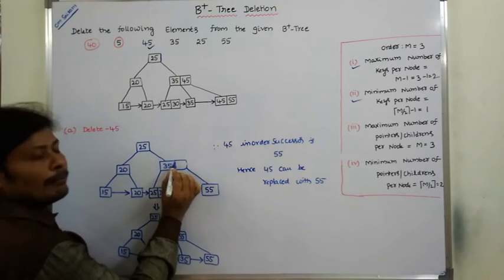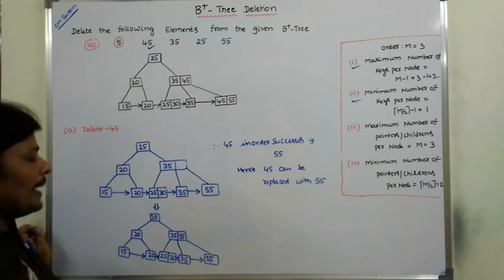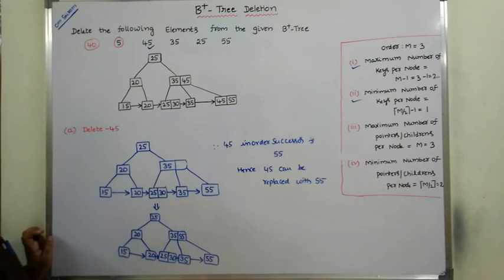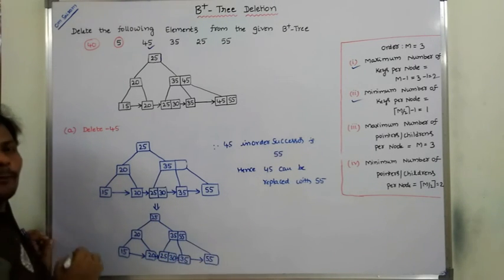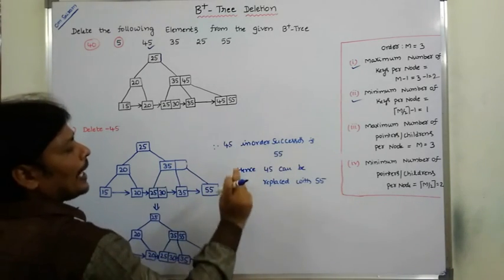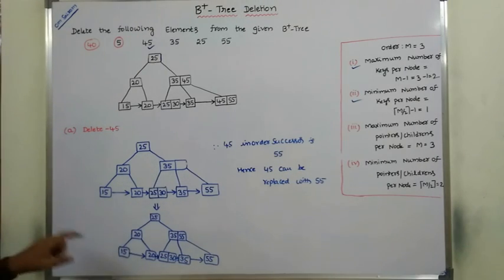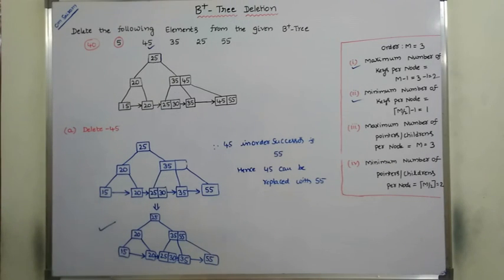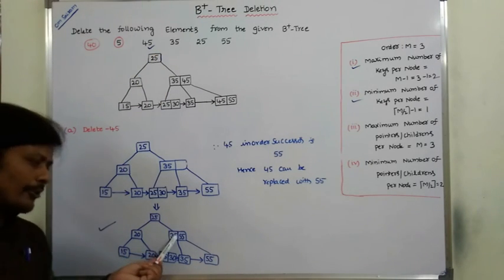The empty space created by deleting 45 can be replaced with the inorder successor of that node. The inorder successor means the minimum element in the right subtree, which is 55. So this empty space is filled with 55. After deleting 45, 45 is replaced with 55. This is the resultant B+ tree. Next, we have to delete 35 from this tree.